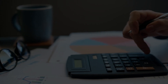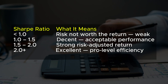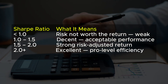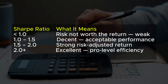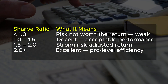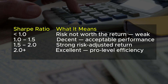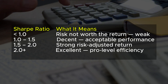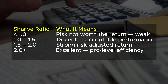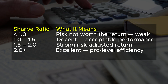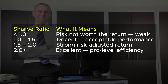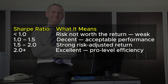If you are going to calculate the Sharpe Ratio for your own portfolio, here is a cheat sheet. Everything below 1 means the risk is not worth the return — weak performance. Sharpe Ratios between 1 and 1.5 are decent. Everything between 1.5 and 2 is a strong risk-adjusted return. And if you have a Sharpe Ratio above 2, you can pat yourself on the back because these are excellent, pro-level efficiencies.